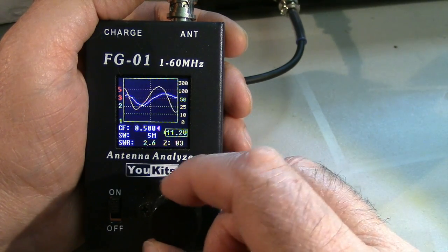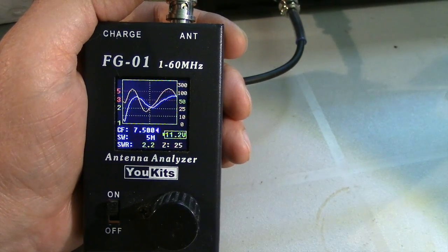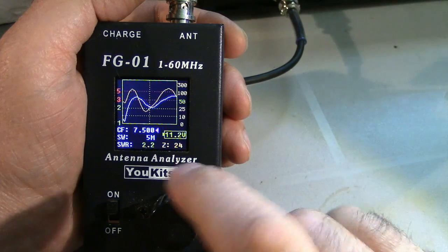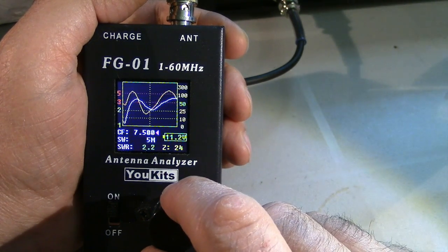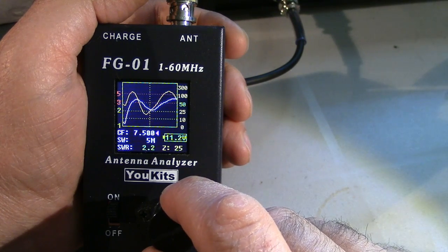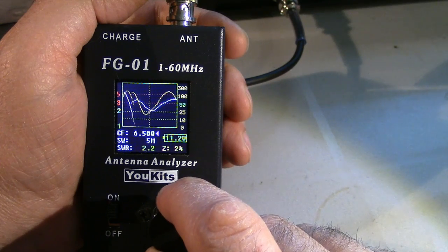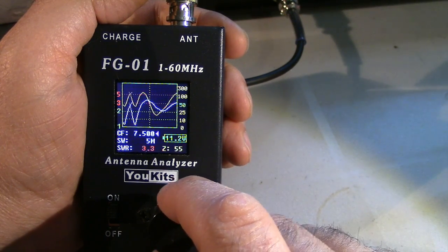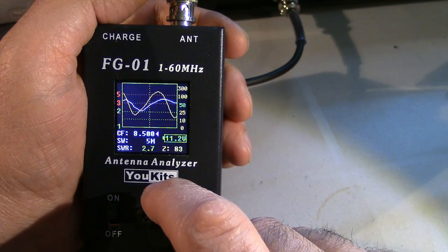Okay, so let's go down to 7 megahertz. I think that's where this antenna starts. So at 7.5 megahertz we've got impedance 24 ohms, SWR of 2.2. Now you can see that there is a bit of a dip.